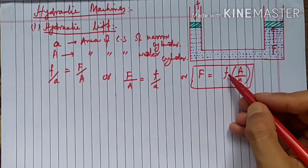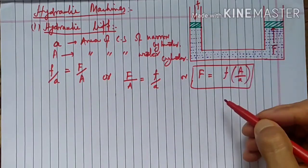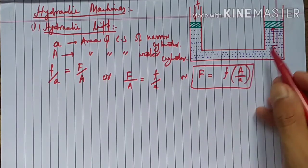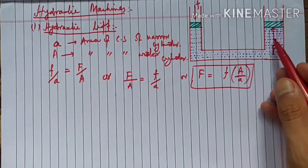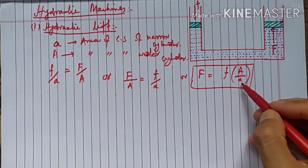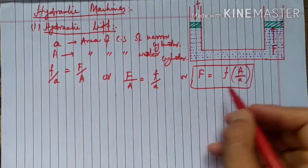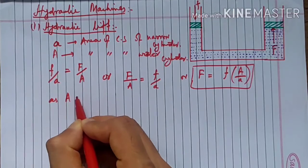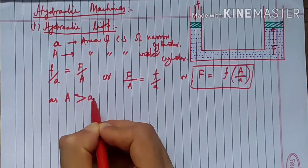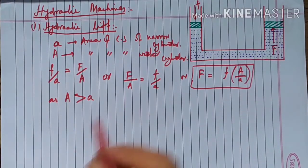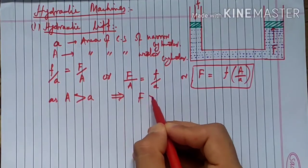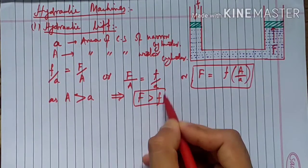Here, small f is the force on the narrow piston with small area of cross-section 'a', and F is the force on the big piston with large area of cross-section 'A'. Since capital A is greater than small a, it follows that F is greater than small f.